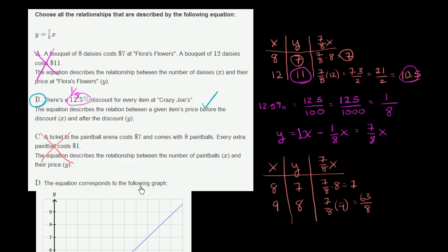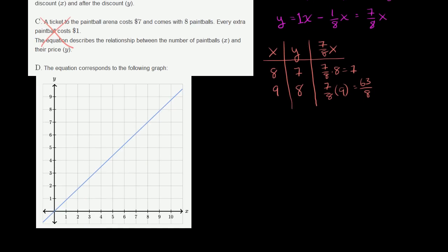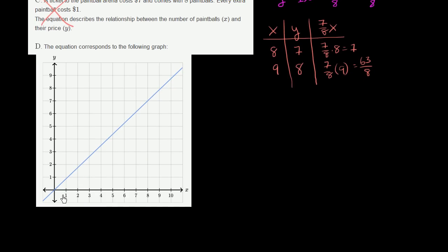Finally, they say the equation corresponds to the following graph. Let's see if y equals 7 eighths x matches this graph. For any x, y is 7 eighths of that. When x equals 8, 7 eighths x equals 7. When x is 0, 7 eighths of 0 is 0. It's a linear relationship through the origin — a proportional relationship — meaning the ratio between y and x is always the same.